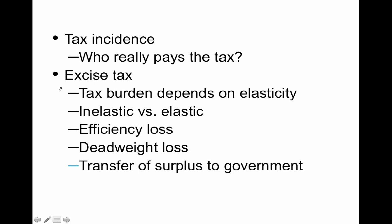So we're going to focus on excise taxes — taxes that get put onto stuff. The tax burden depends on elasticity: inelastic or elastic demand and supply are going to determine who pays the tax. Economists don't particularly care who writes the check to the government — whether consumers or producers write it — what matters is where the taxes go. There is also a deadweight loss, which is what we call that efficiency loss, and we'll see some consumer and producer surplus transfer to the government.